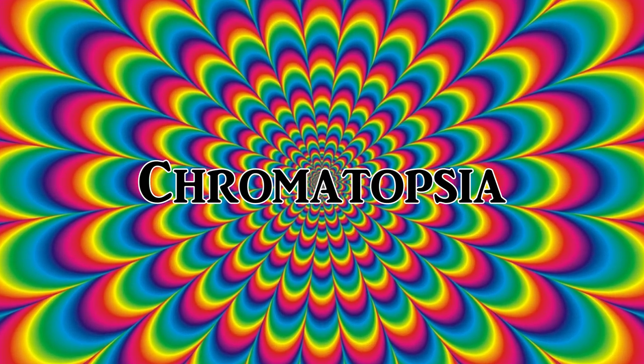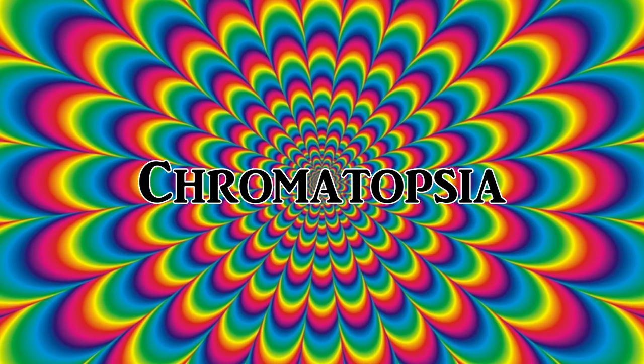And finally, the opposite of achromatopsia, called chromatopsia, exists too. This is when you see extra color. This can occur, for example, during a migraine.